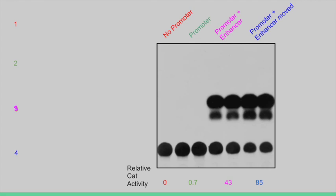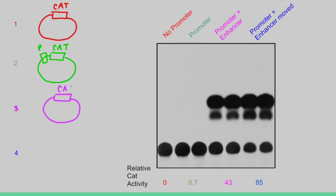There were four conditions total that were observed in this experiment. In lane 1, no promoter was present, meaning the construct transfected into the cells only contained the CAT gene. In condition 2, the promoter was present, so the construct contained the P10 promoter which controlled the expression of the CAT gene. In condition 3, not only was the promoter present, but an enhancer element was included as well. Lastly, condition 4 contained the promoter, and the enhancer element was moved to a different position.